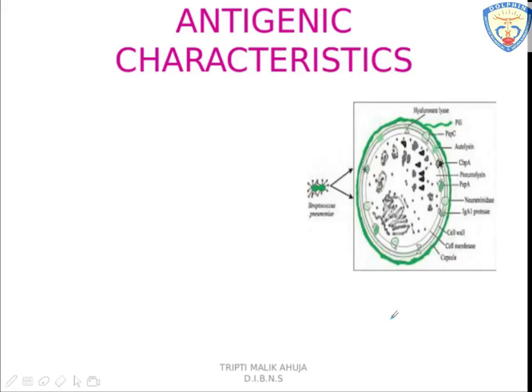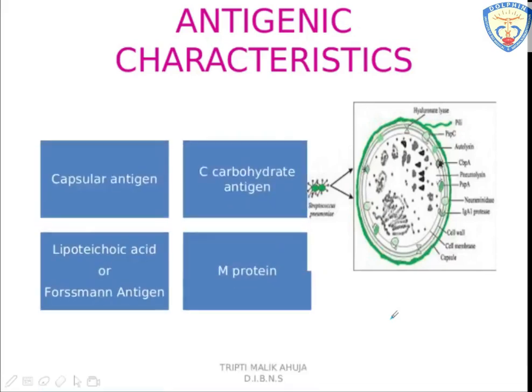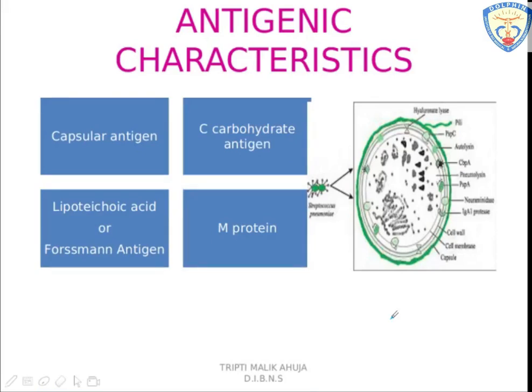The organism possesses a number of antigens in the capsule and in the cell wall. The capsular antigen is also called the SSS (soluble specific substance). There is the C carbohydrate antigen in the cell wall, lipoteichoic acid also known as Forssman antigen, and protein.